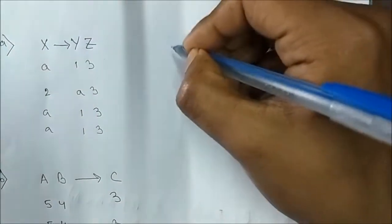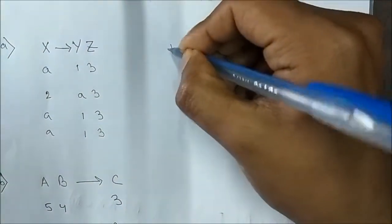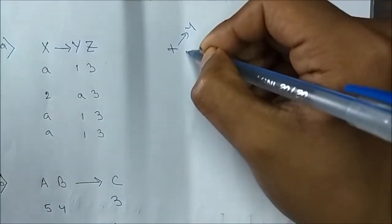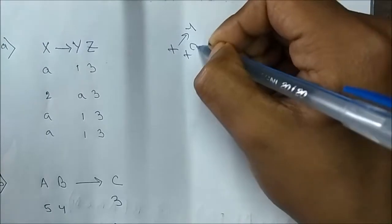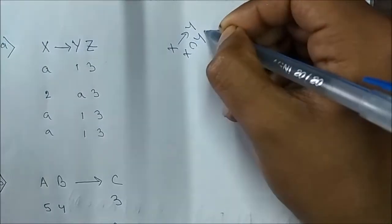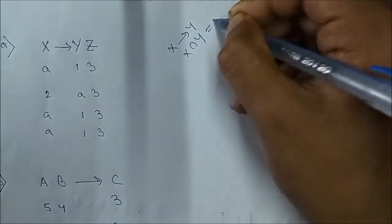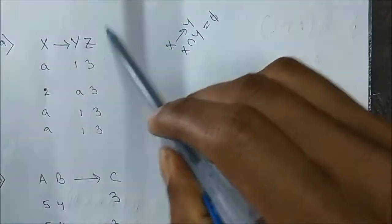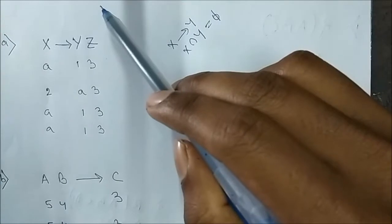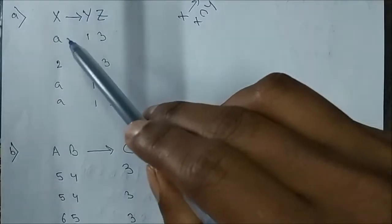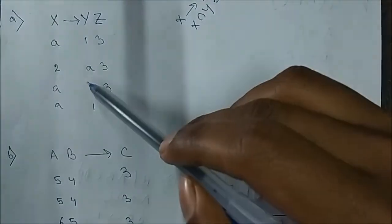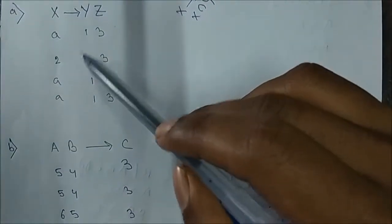I've told you what non-trivial means: if X is a functional dependency on Y, then X intersection Y should be phi — it should be a null set. Now let's check whether this dependency is trivial or non-trivial.